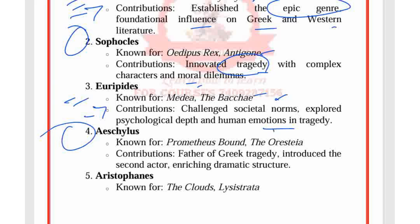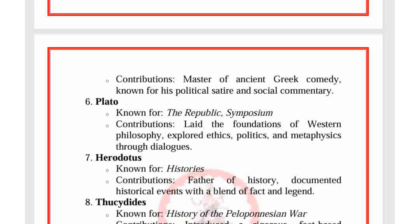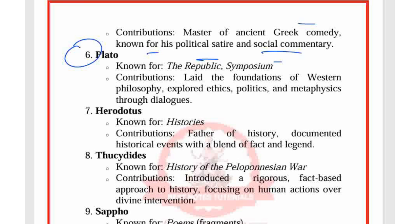Aeschylus, known for Prometheus Bound and the Oresteia, is considered the father of Greek tragedy and introduced the second actor, enriching dramatic structure. Aristophanes, known for The Clouds and Lysistrata, was a master of ancient Greek comedy known for his political satire and social commentary. Plato, known for The Republic and Symposium, laid the foundation of Western philosophy and explored ethics, politics, and metaphysics through dialogues.